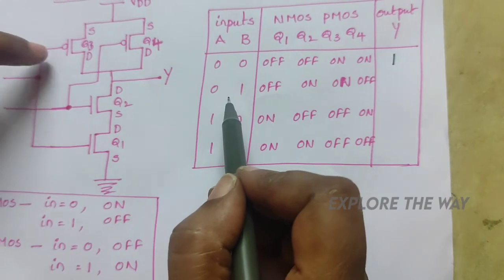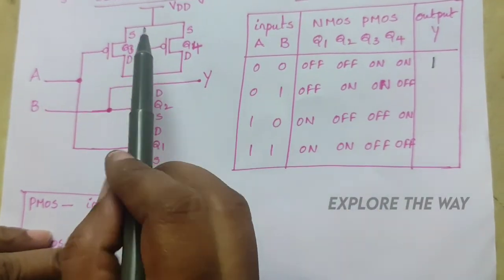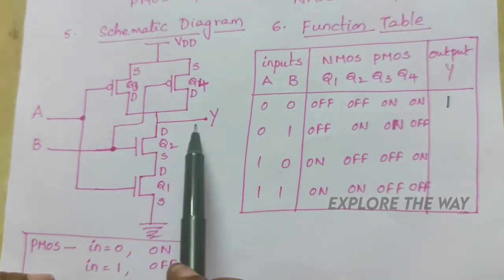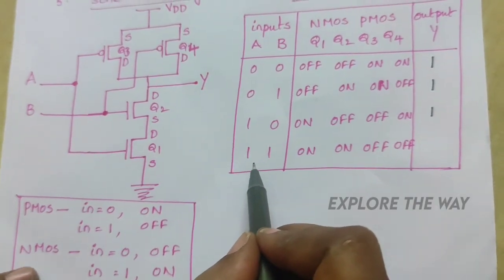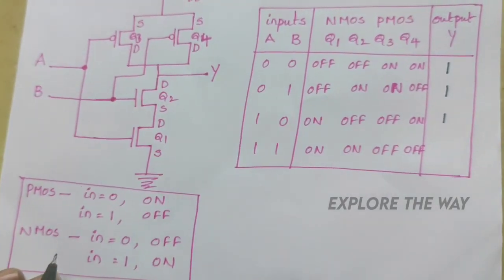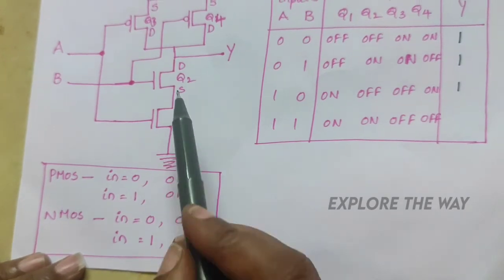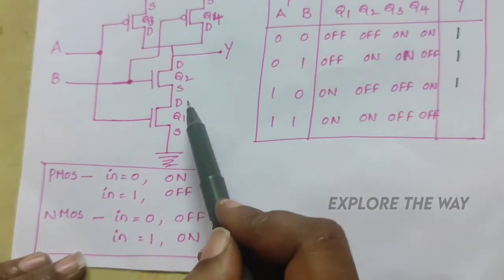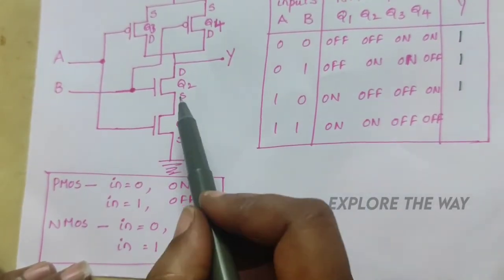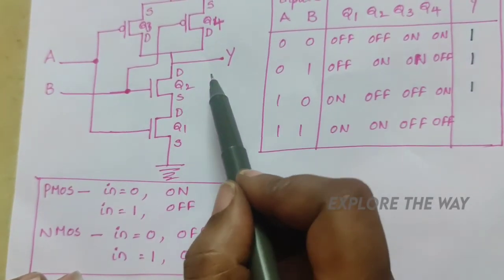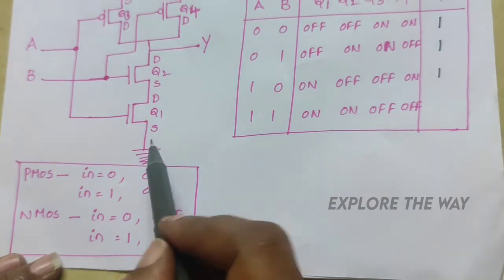When the inputs are both 1, the NMOS transistors Q1 and Q2 are both in the on state. Only when both NMOS transistors are on does it provide a path from the output to ground. So when inputs are 1 and 1, Q1 and Q2 are on and provide a path from output to ground, making the output 0. These are the steps you must follow to design any CMOS logic function.